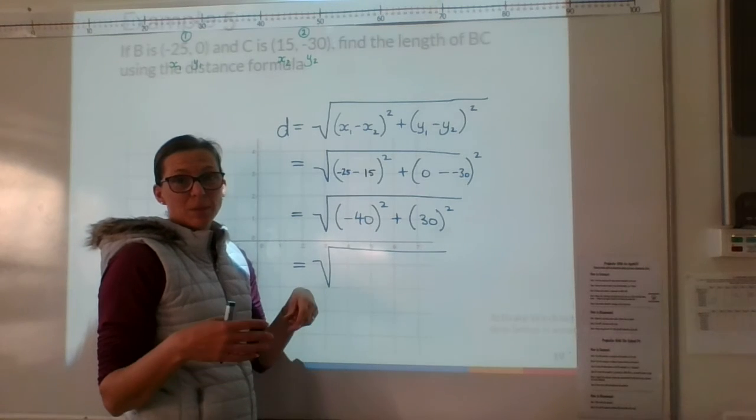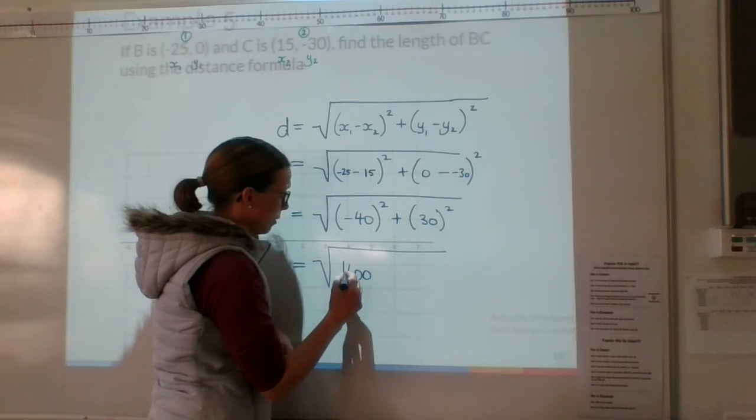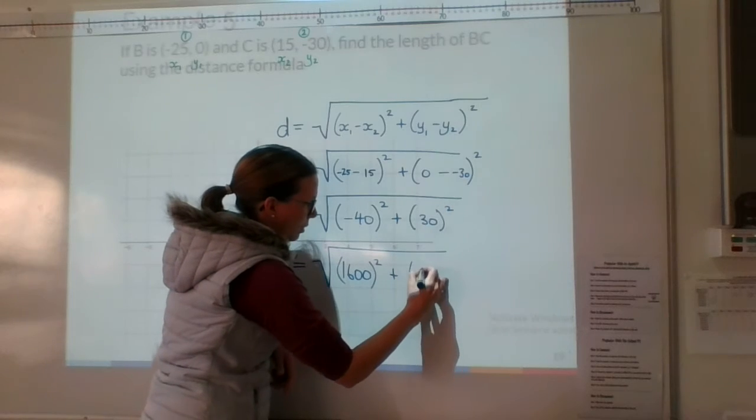And we've got 10 times 10. So we've got 1600 or 1600 squared plus 30 squared, which is 900.